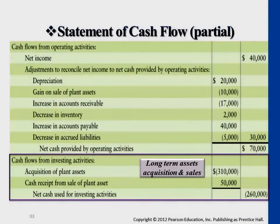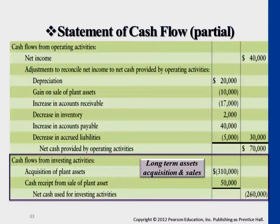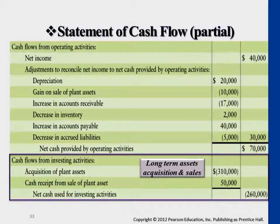So far what we talked about is the second part of the statement of cash flows. If we move that $50,000 here, you see the upper part is operating income, and then you have operating cash flows. This part here, you have long-term assets cash flows. You receive cash $50,000 — the book value plus $10,000 gain. And then $310,000 acquisition — the problem in the textbook directly gave you this number. So if you know for a fact the problem gives you this, just subtract $310,000. That's the cash the company used up to purchase long-term assets.